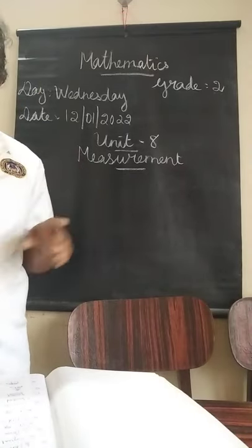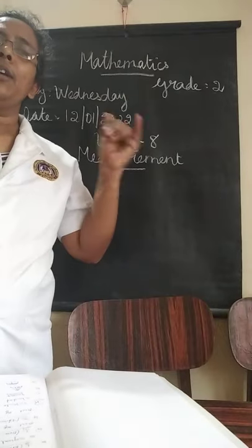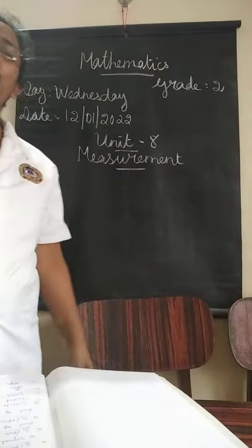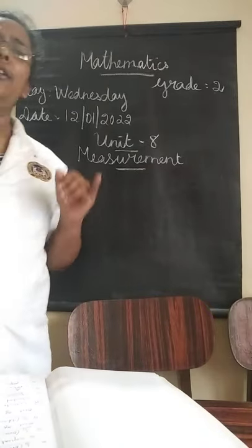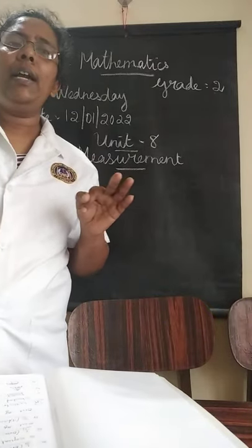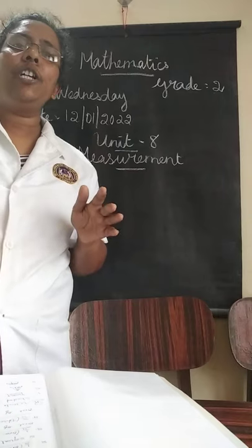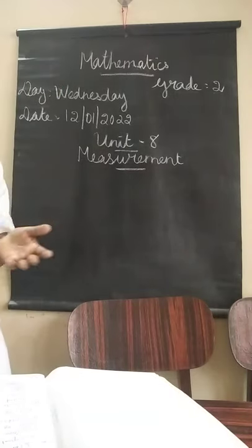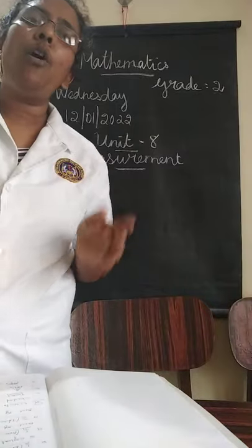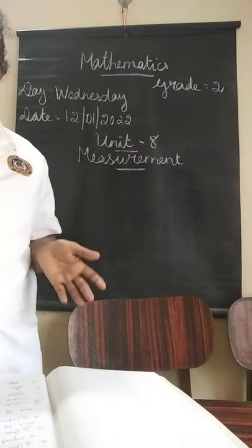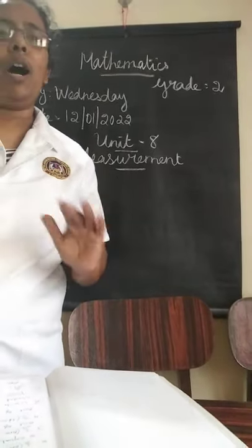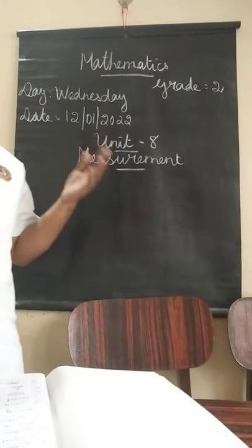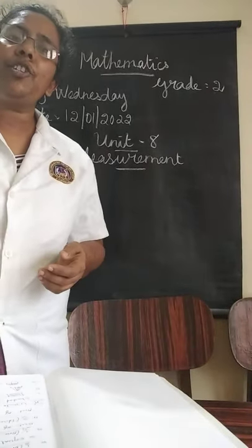The fraction has two parts. What are they? Numerator and denominator. Say the spelling of numerator: N-U-M-E-R-A-T-O-R. And denominator: D-E-N-O-M-I-N-A-T-O-R.